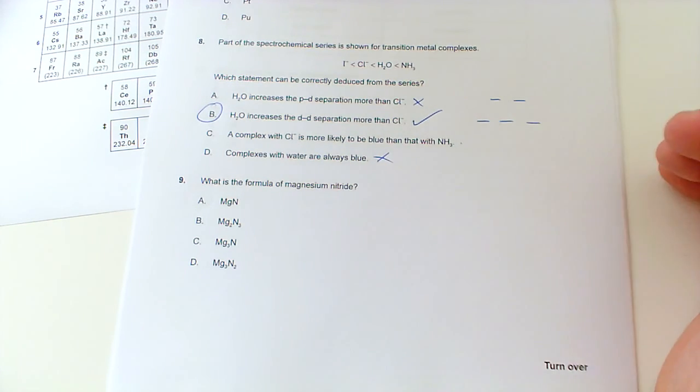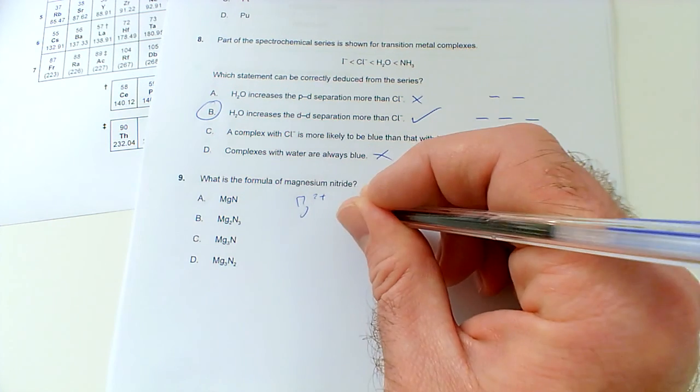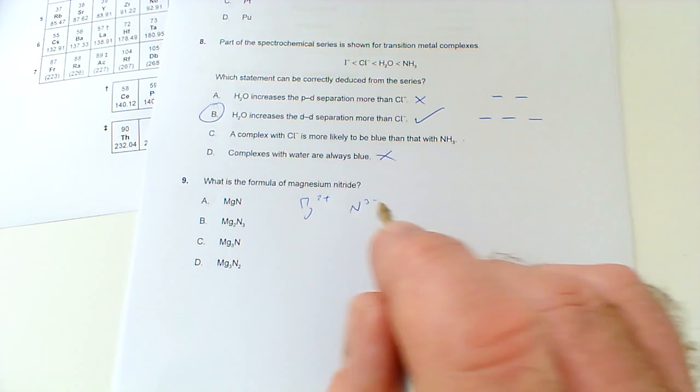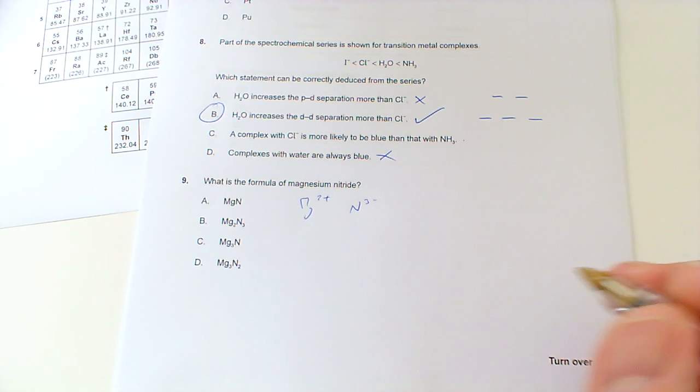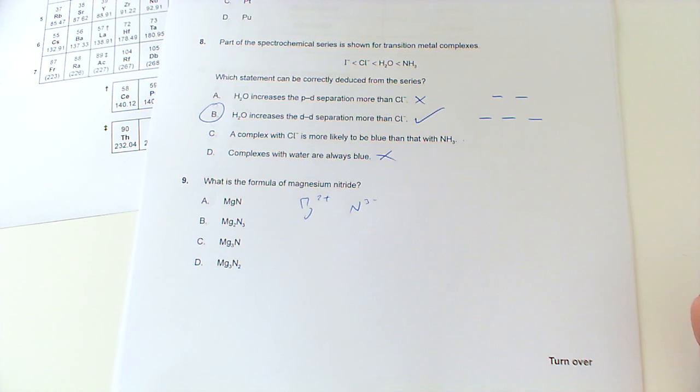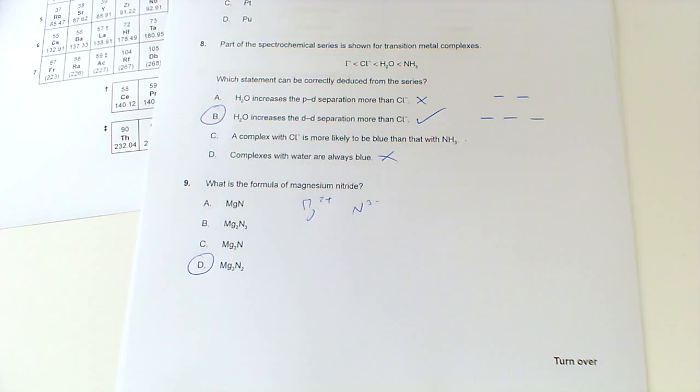And then number nine: what is the formula of magnesium nitride? Well magnesium is Mg2+, nitride is N3- because in group five likes to gain three electrons. We need to put them together so they cancel out. The common factor would be six, so therefore we need three of these, two of those, and then they would cancel each other out. So we'd be looking for Mg3N2, that would be D.